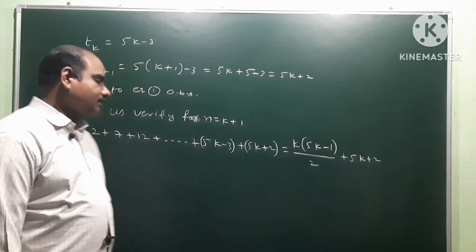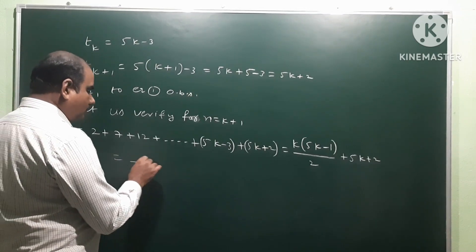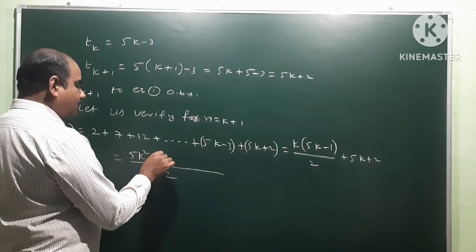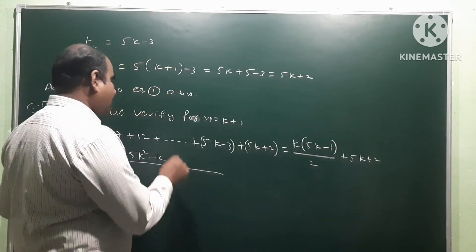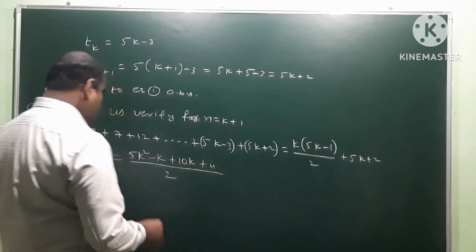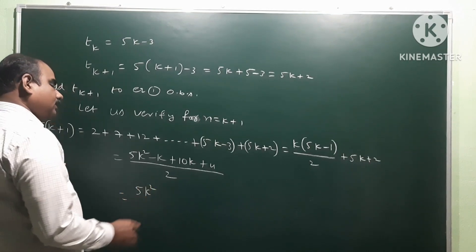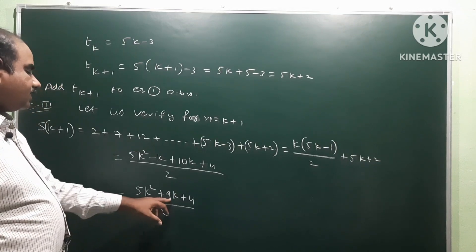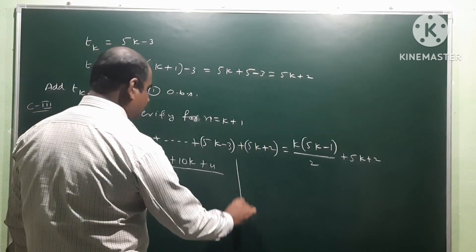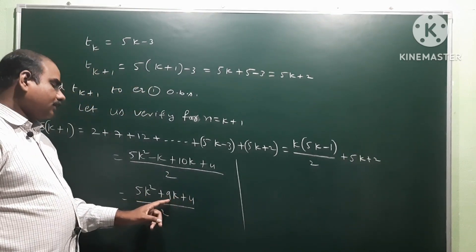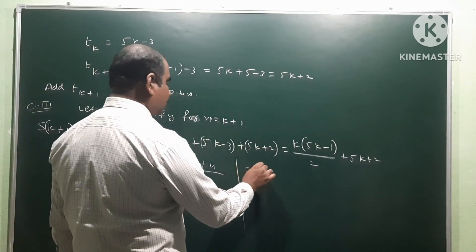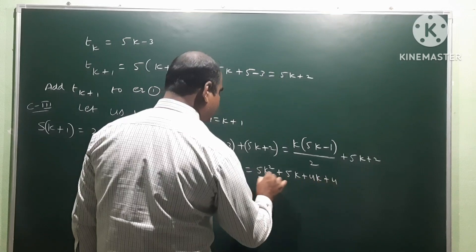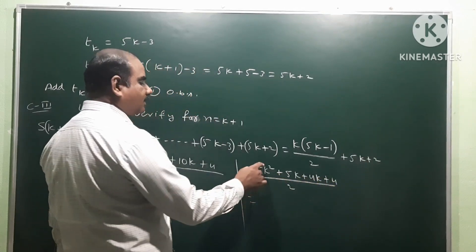Now simplify the RHS. Take LCM: k into (5k minus 1) gives 5k squared minus k, and 2 into (5k plus 2) gives 10k plus 4. So we get 5k squared plus 10k minus k plus 4 by 2, which simplifies to 5k squared plus 9k plus 4 by 2. To factorize: 5 times 4 equals 20, and 5 plus 4 equals 9, so this is written as 5k squared plus 5k plus 4k plus 4 by 2.